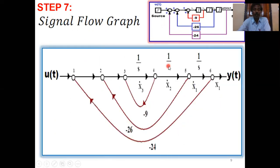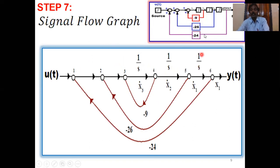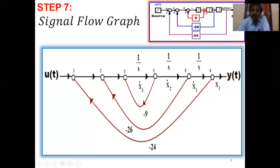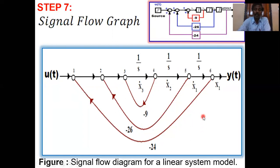Drawing the signal flow graph: each comparator corresponds to a node — nodes 1, 2, 3 for the summing points and nodes 4, 5, 6 for the integrator outputs. u(t) is the input and y(t) is the output. The feedback branches are: node 4 to node 3 with gain −9, node 5 to node 2 with gain −26, and node 6 to node 1 with gain −24. This is the signal flow graph for the linear system model.